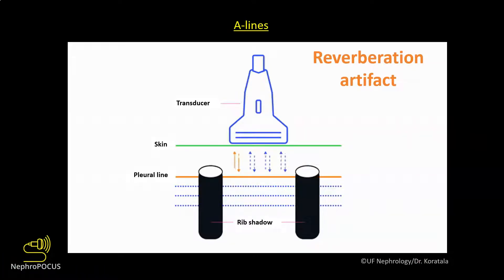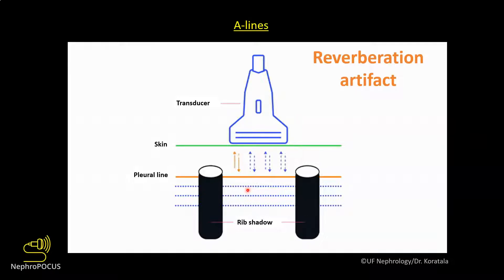Mechanistically, A lines are reverberation artifacts. When the initial ultrasound waves hit the pleural line and are reflected back, the pleural line is depicted on the monitor, but some waves are reflected back and forth between the pleural line and the face of the probe because of the underlying air in the lung, which is reflective to ultrasound. Each reflected wave takes longer to return, and for the ultrasound machine time equals distance, so the machine thinks deeper structures are present. This produces multiple equidistantly placed reflections of the pleural line, which are called A lines.